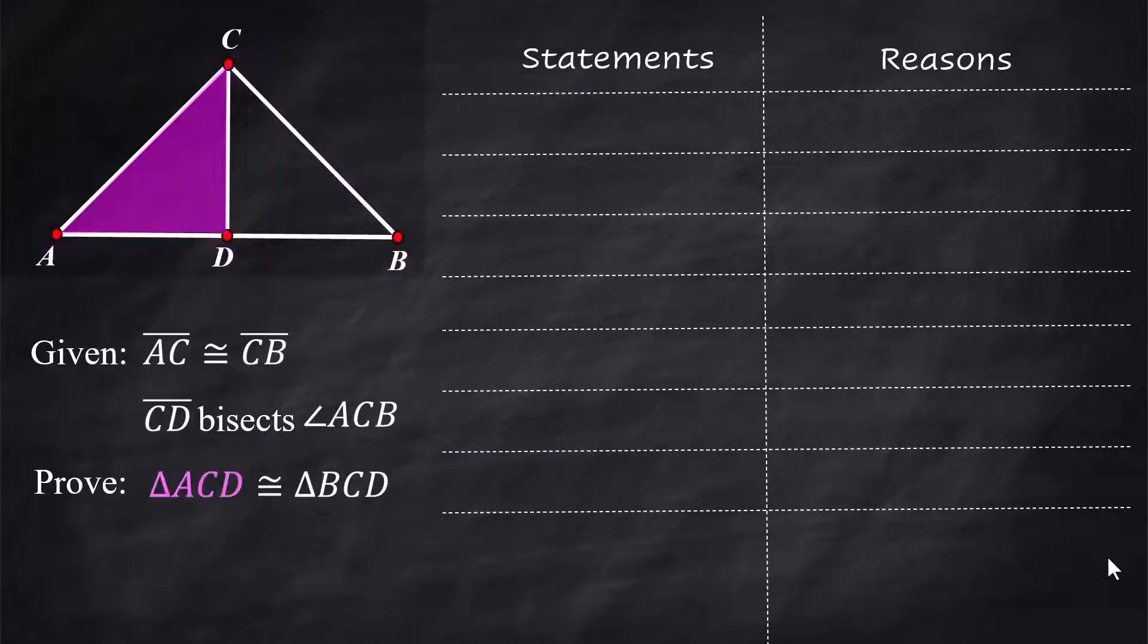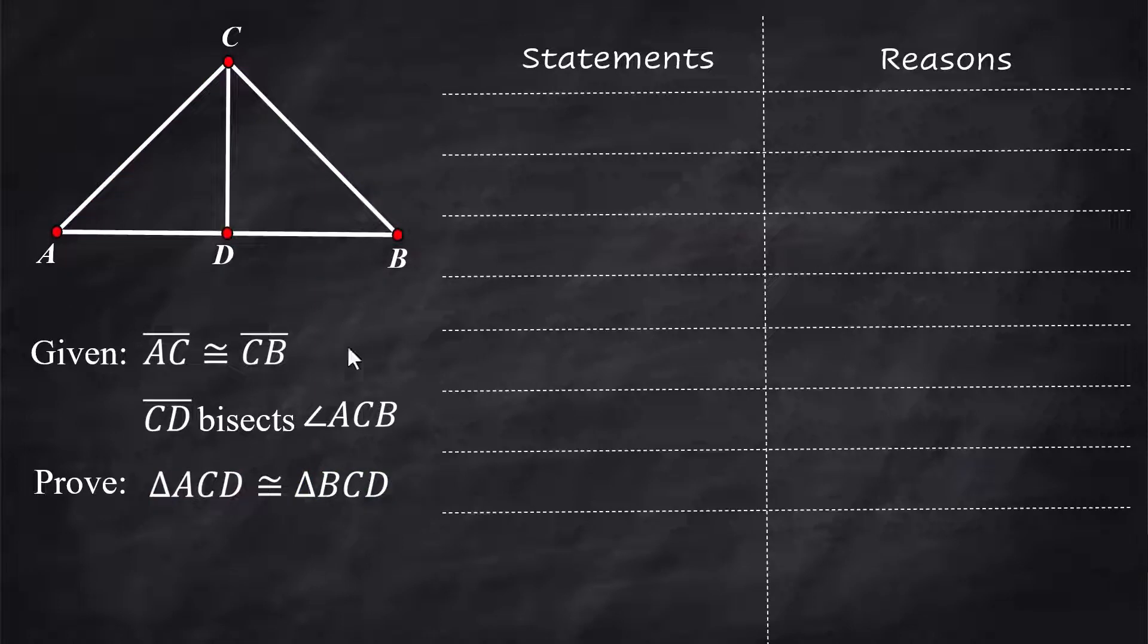For this one, we are supposed to prove that triangle ACD is congruent to triangle BCD. These are actually two triangles sitting right next to each other, and they share a side in the middle. Let's use the given information and investigate this a little bit.